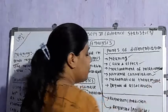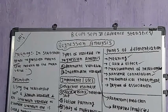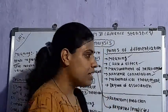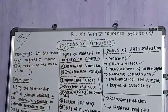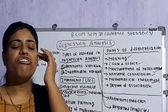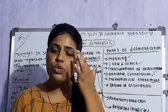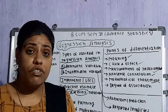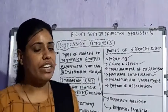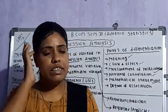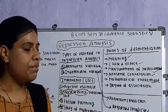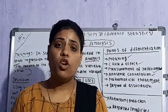The next point is mathematical treatment. Correlation analysis is not capable of further mathematical treatment. But regression analysis is capable of further mathematical treatment. Once we get the regression equations or the line of regression, they can be used to predict the value of another variable when we have the value of one variable. That is why regression is capable of further mathematical treatment, but correlation is not.